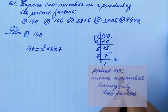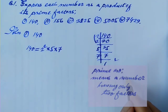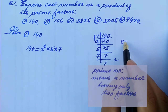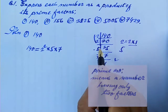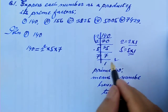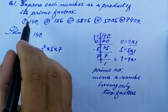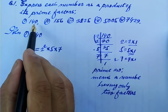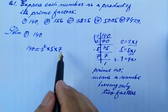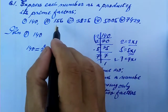Let us understand what a prime number is. A prime number means a number having only two factors. For example, 7 equals 7 into 1 — two factors. Similarly, 5 equals 5 into 1, and 7 equals 7 into 1. So the question asks you to express 140 as a product of its prime factors, which is 2 squared into 5 into 7.